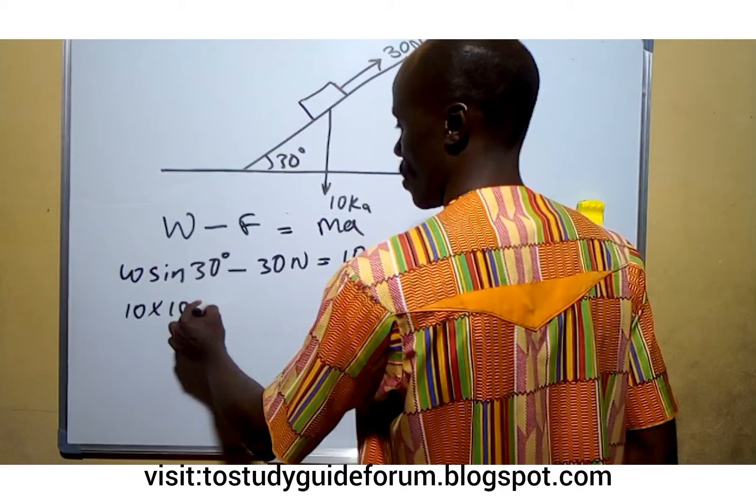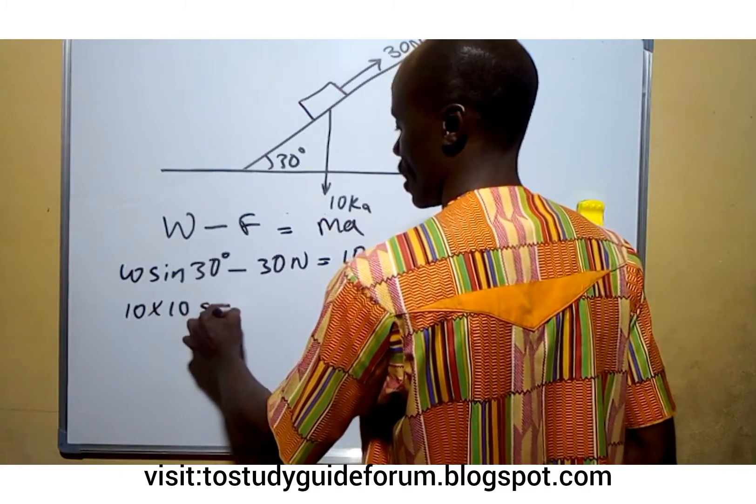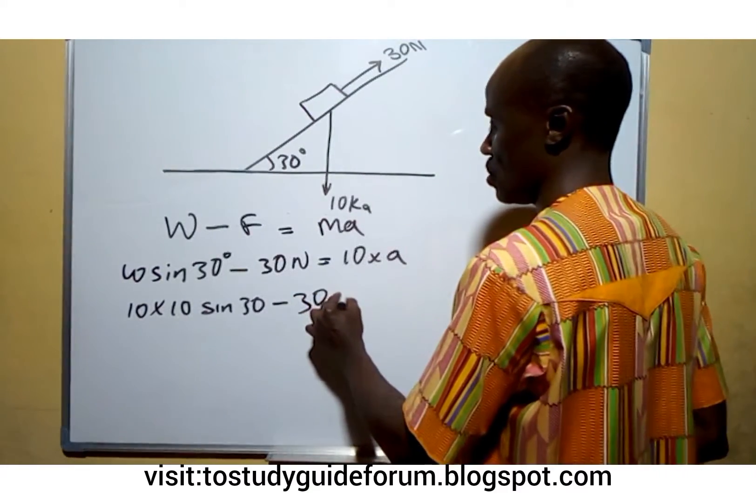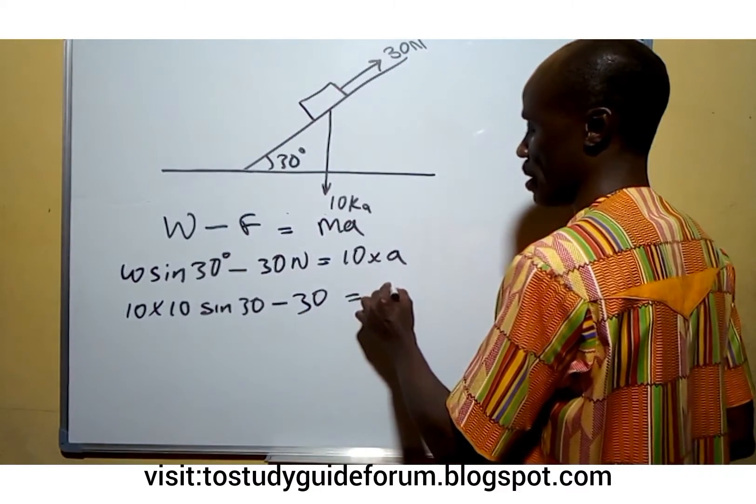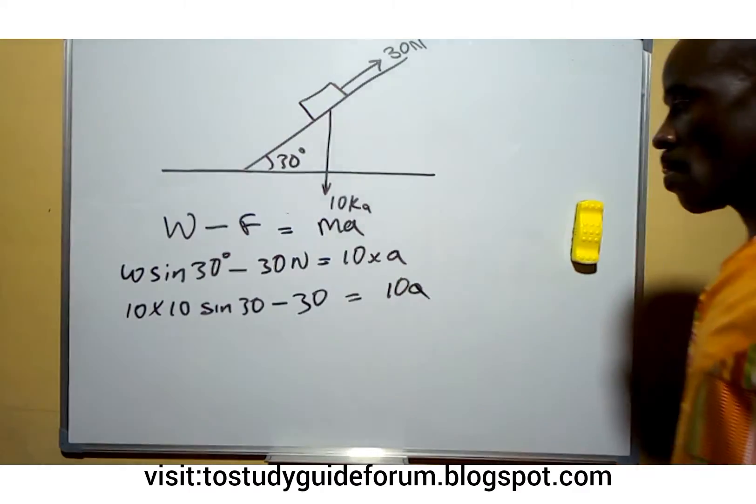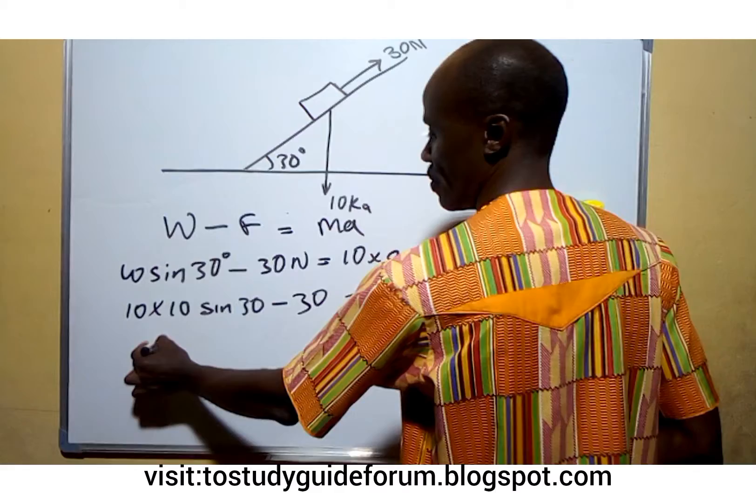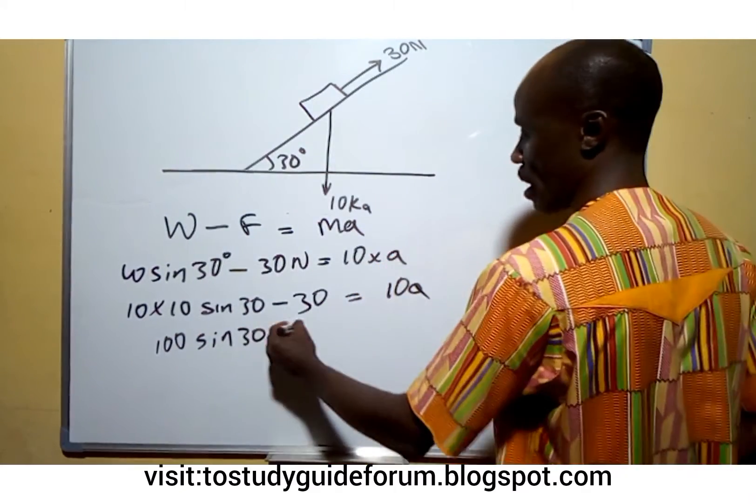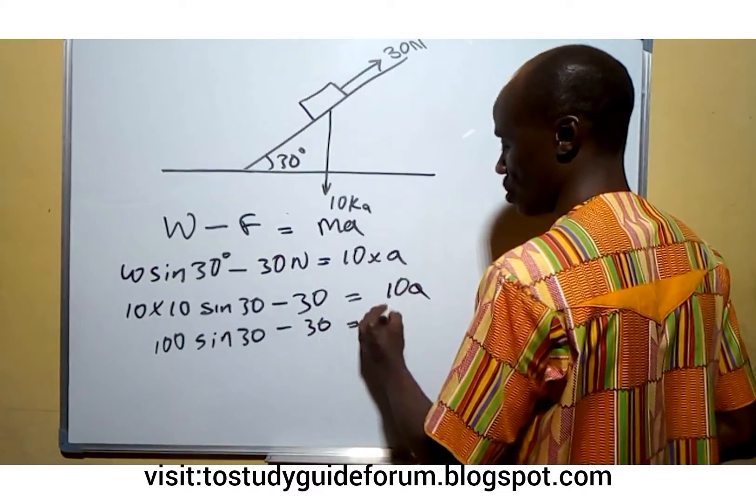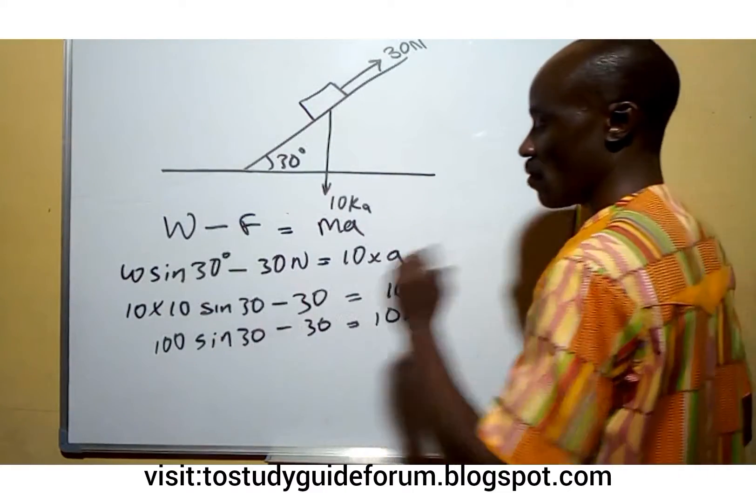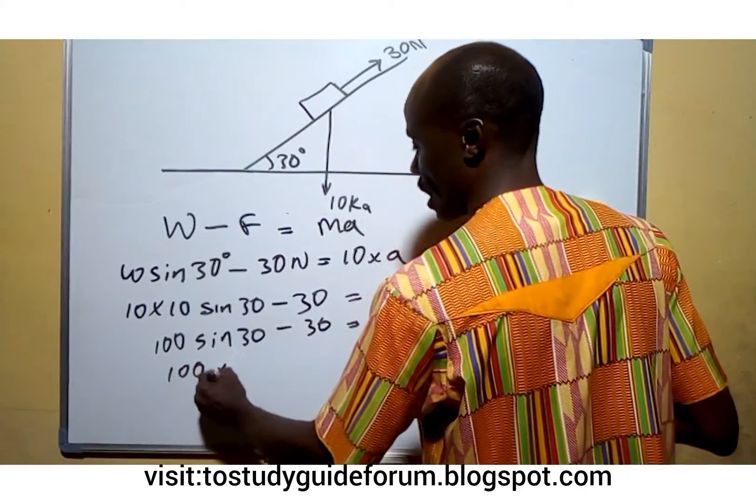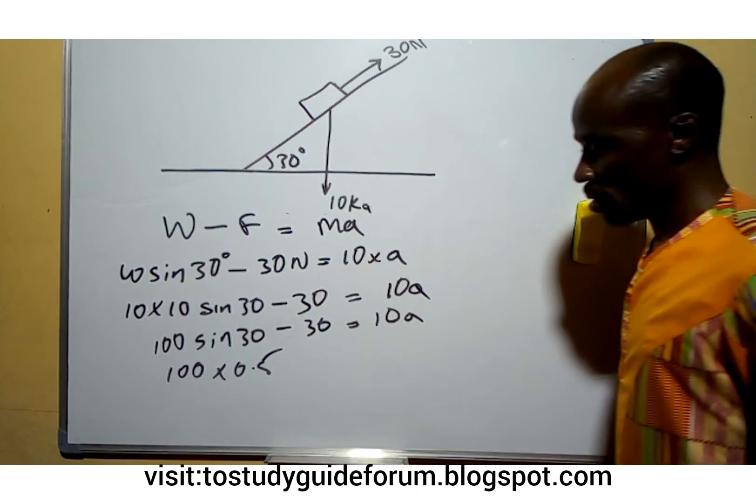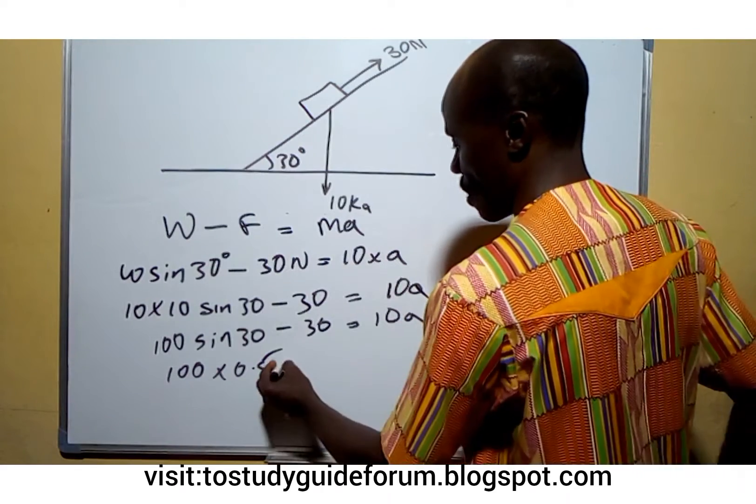That will give us 30 newtons times a. So now when we multiply this, we have 100 sine 30 minus 30 equals 10a. This will give us 100 times 0.5, that is sine 30 will give us 0.5, minus 30.